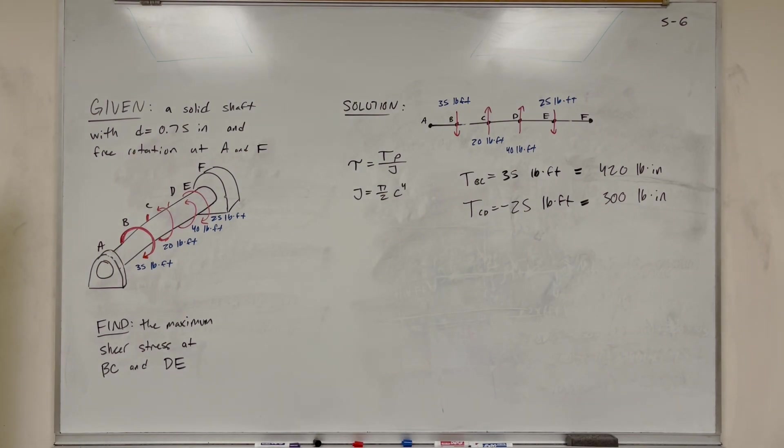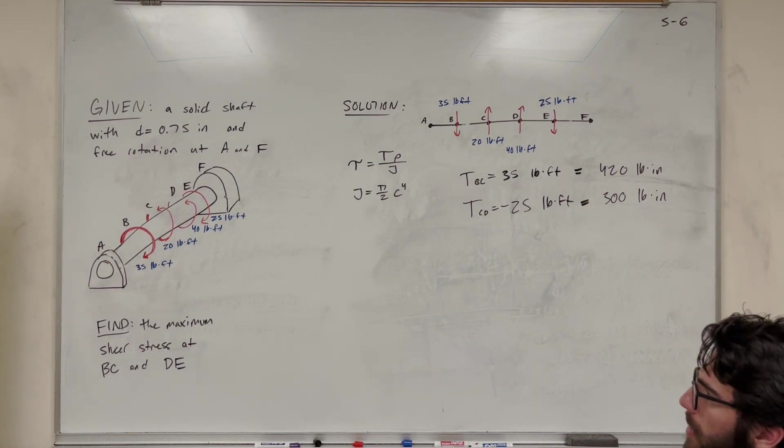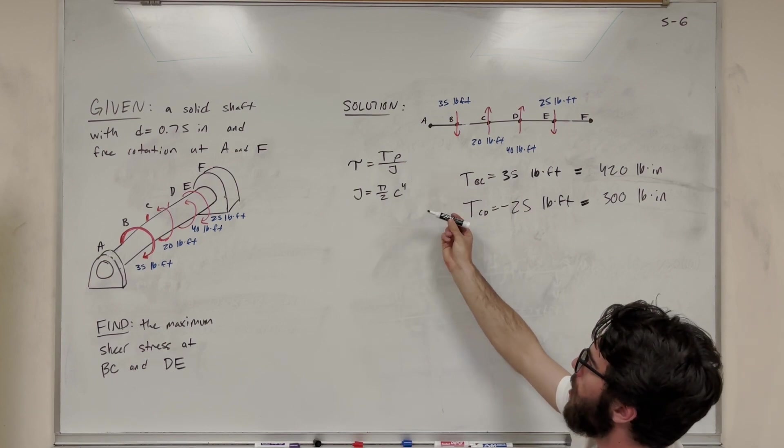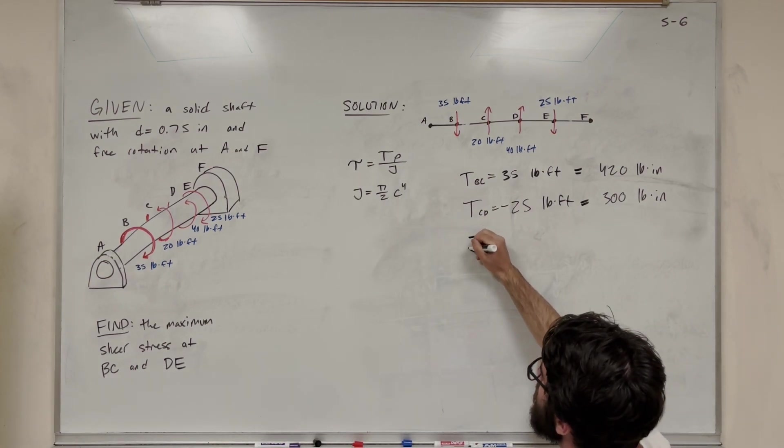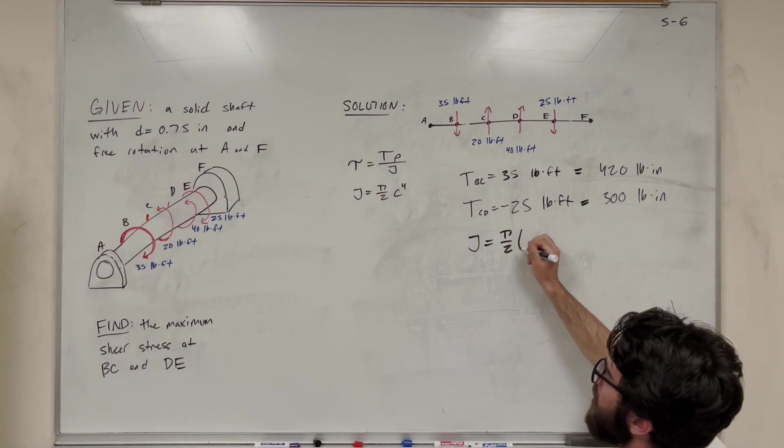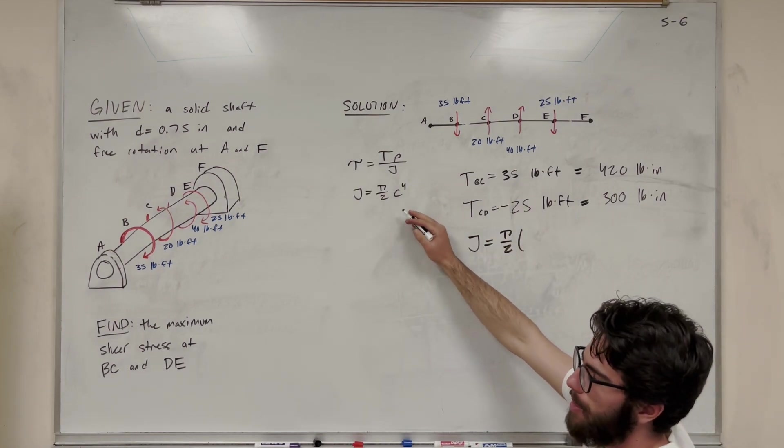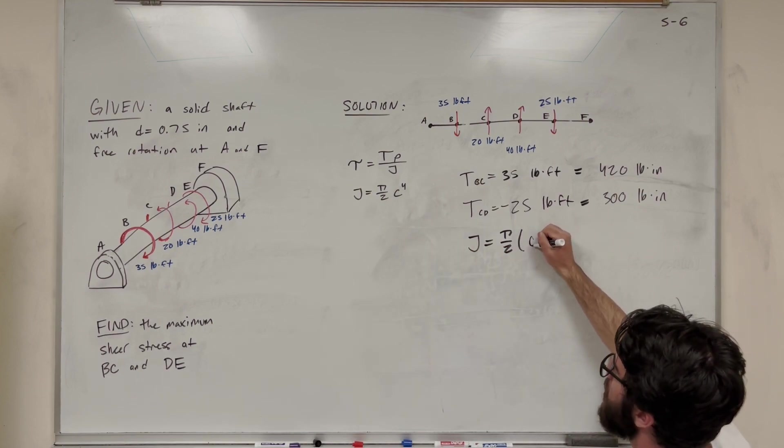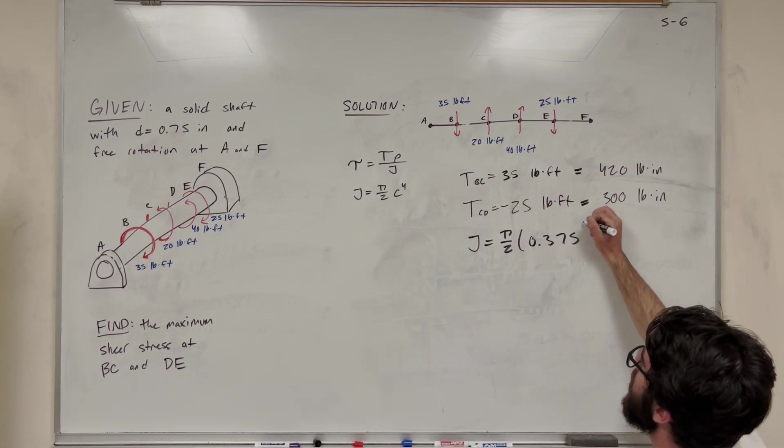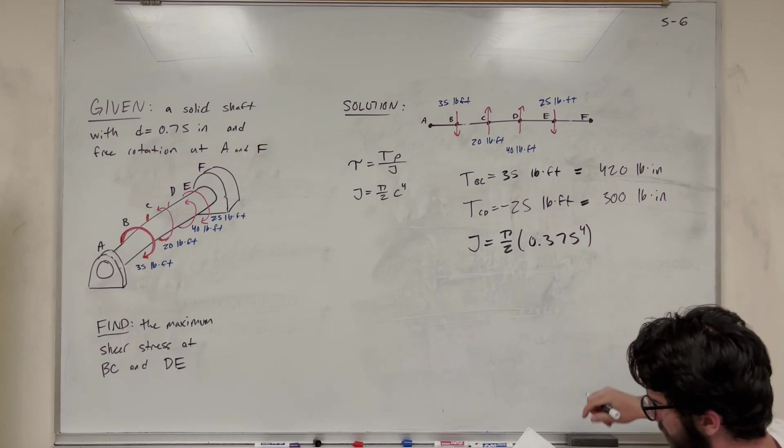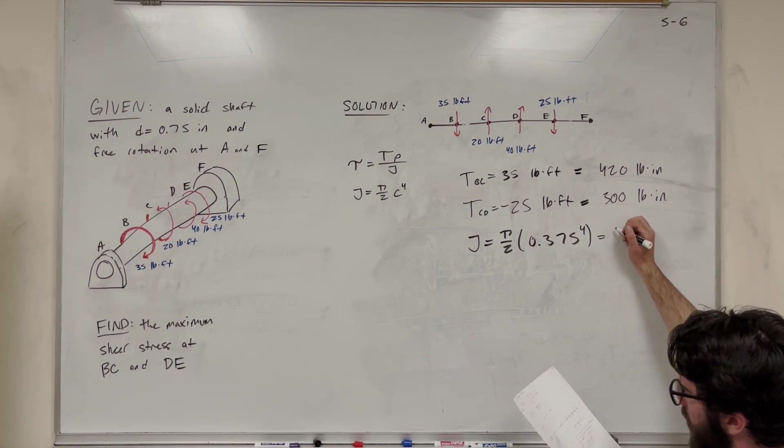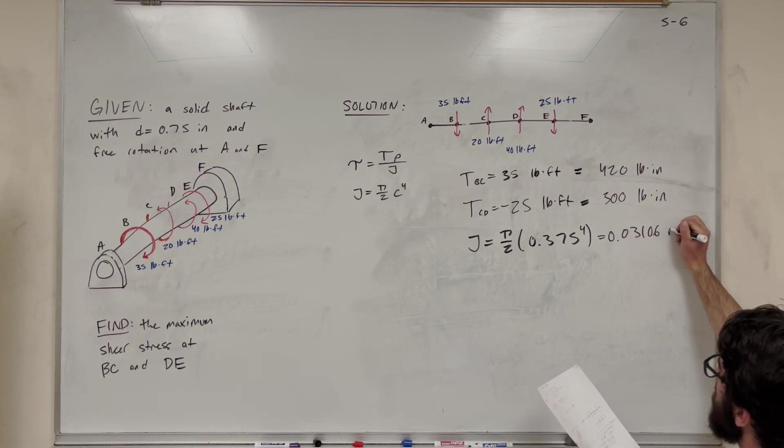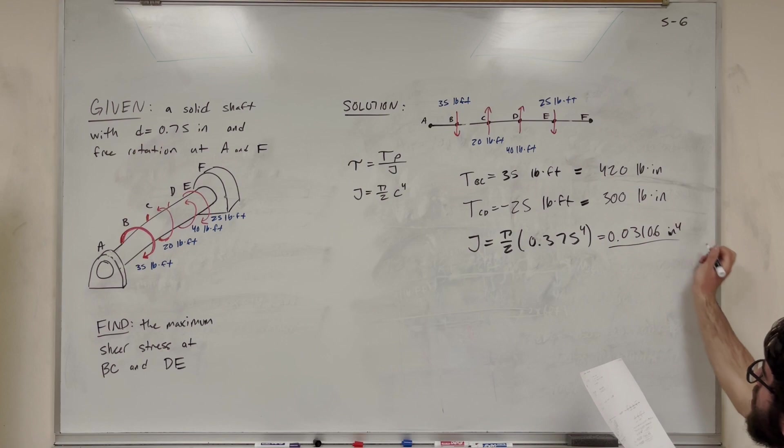Okay, so then we need to find what our polar moment of inertia is, right? If we want to use this equation, we found the numerator, but we need to find what the polar moment of inertia is. So polar moment of inertia, let's use the equation pi over 2. C is diameter, or it's not diameter, it's radius. So if you want to take radius, we're going to take half of that diameter. 0.375, raise that to the fourth power. Plug that in, then you get 0.03106 inches to the fourth.